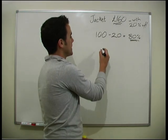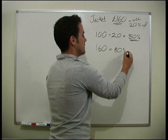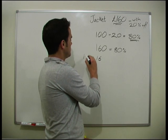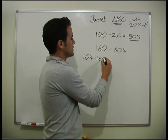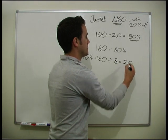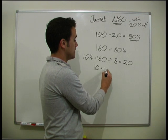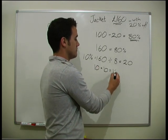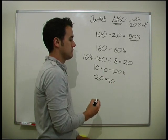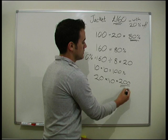So 160 equals 80%. We need to find 100%. Let's find 10% first. 10% of 80% is found by doing 160 divided by 8, which gives us 20. Now we need to find 100%, so we do 10% times 10, which is 20 times 10, giving us £200 — that was the original price of the jacket.